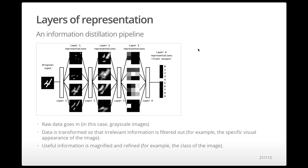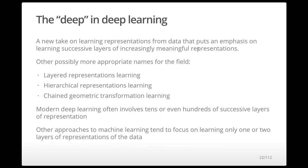So where does 'deep' in deep learning come from? It's not that models have deeper insights — it's that we use many layers. Traditional machine learning might have one or two layers of representation, while deep learning models can have dozens or even hundreds. A more accurate name might be 'layered representation learning' or 'hierarchical representation learning,' but 'deep' is short and catchy, so that's what people call it.